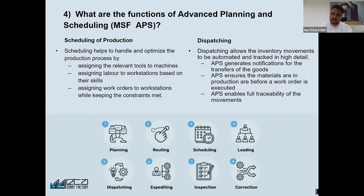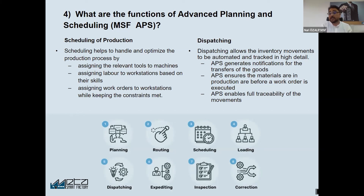APS should also ensure all materials are available before the work order is planned. And critically, you have to have full traceability to check all your stocks and also understand the reason why you are not able to schedule a production order.